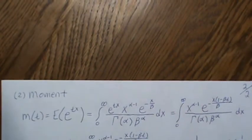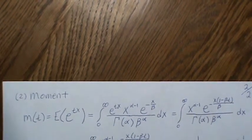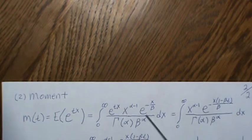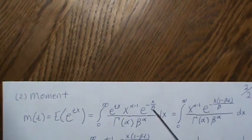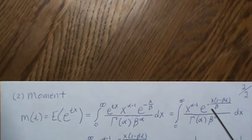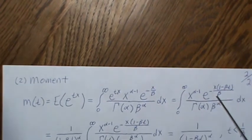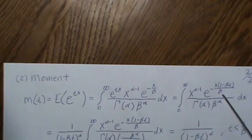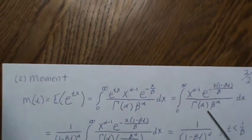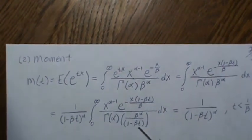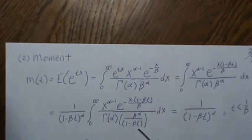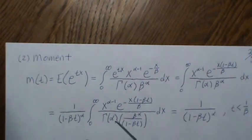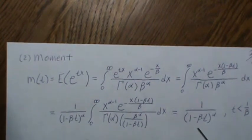So the moment generating function is defined as this expected value. So you stick in E to the tx times the gamma. And then now we can combine those E's directly. And we use the same trick to make this look like another gamma, where this is the new beta. So then we need to multiply and divide by something over here to make it look like another gamma distribution. And then that integrates to one and that's left over.